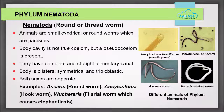Phylum Nematoda, or roundworms: these animals are small cylindrical or round worms which are parasites. Their body cavity is not a true coelom, but a pseudocoelom is present. They have a complete and straight alimentary canal. Their body is bilaterally symmetrical and triploblastic. Both sexes are separate. Examples include Ascaris (roundworm), Ancylostoma (hookworm), and Wuchereria (filarial worm), which causes elephantiasis.